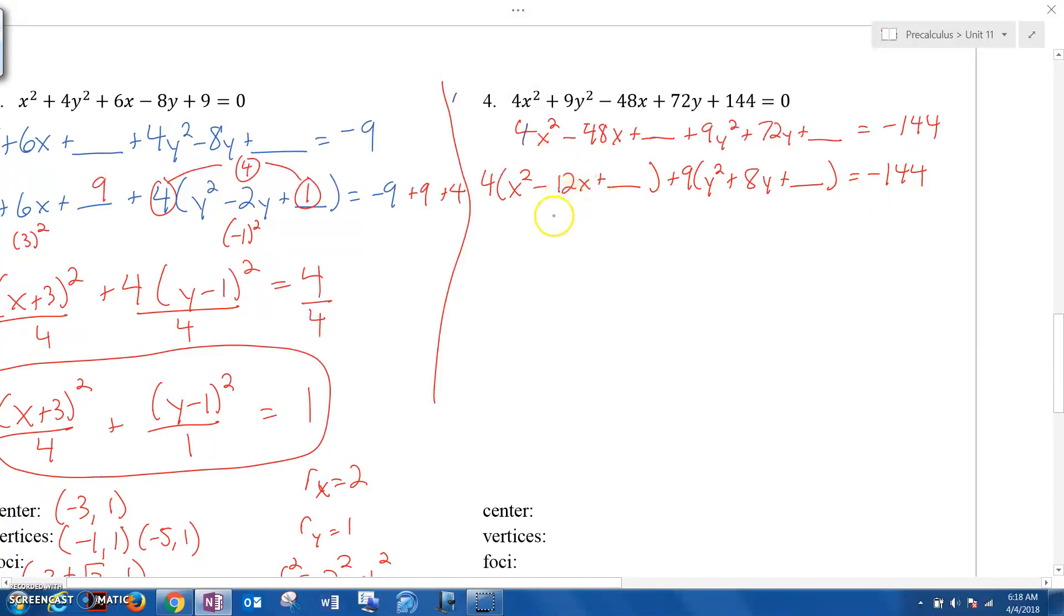Okay, so now we have to add numbers. So half of 12 is -6, squared is 36. But again, we're not adding a 36, we're adding 36 times 4, which is 144. Because 36 times 4, so we're going to add 144 to this side. Here, half of 8 is 4, 4² is 16. 9 times 16 is also 144. So we're going to add another 144 to balance it out on the right side. So this is what it looks like. We have 4 parentheses. This factors into -6, -6, so (x-6)². This factors into 4 and 4, so (y+4)² equals, these cancel, we're left with just 144.